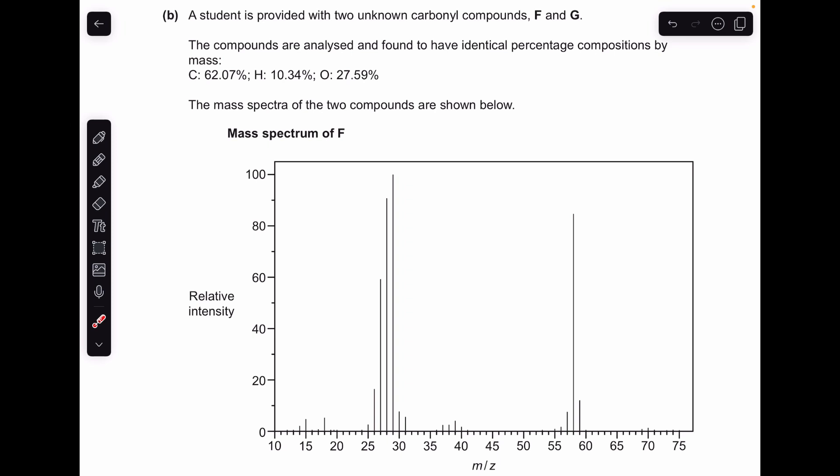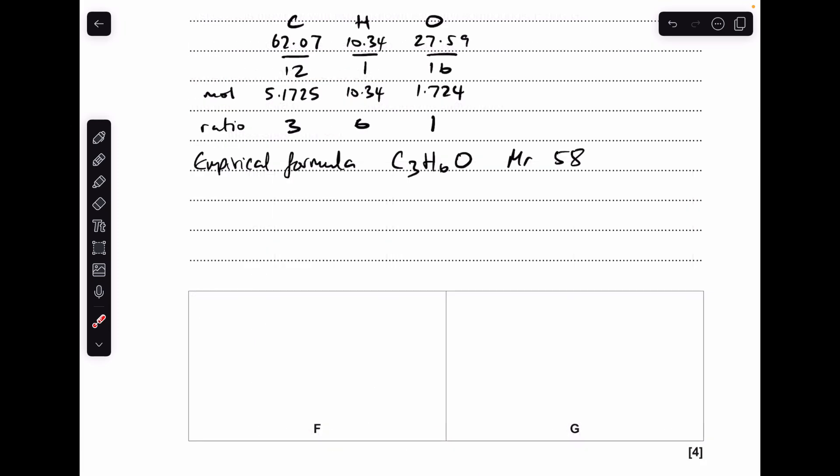Moving on to part B. So first thing I'm going to do is work out the empirical formula using this information. So there's all the working out there. The empirical formula comes out at C3H6O.